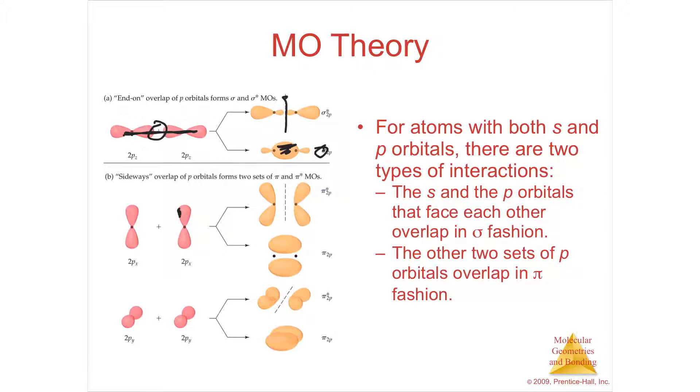Anything that's going to overlap where there's overlap on this side and this side, where it's up and down or sideways, are going to give you pi. So you have pi 2p and pi star 2p, and then the other way, pi 2p and pi star 2p. So the p going in the x direction and the p going in the y direction will be degenerate with the same energy. The sigmas will have slightly different energy.